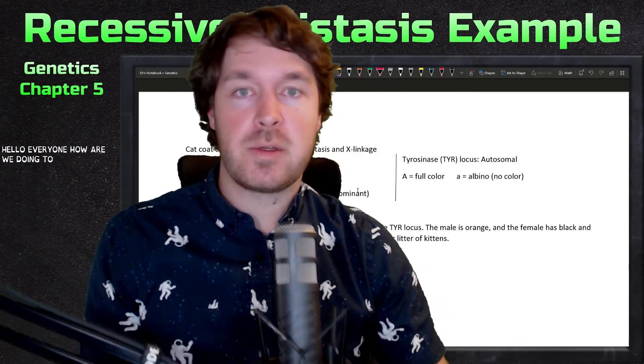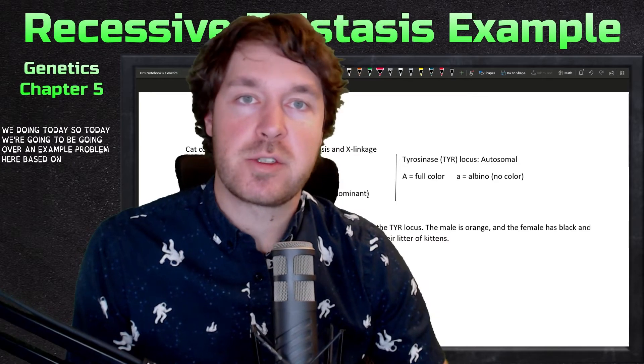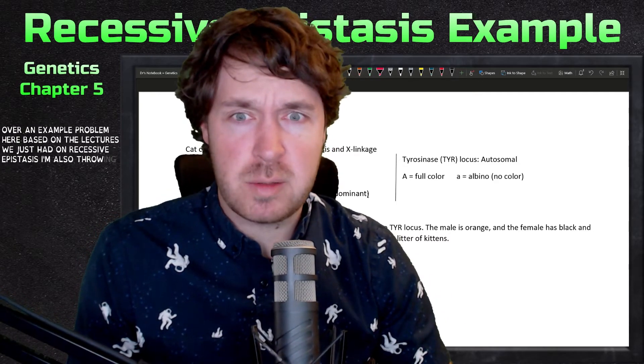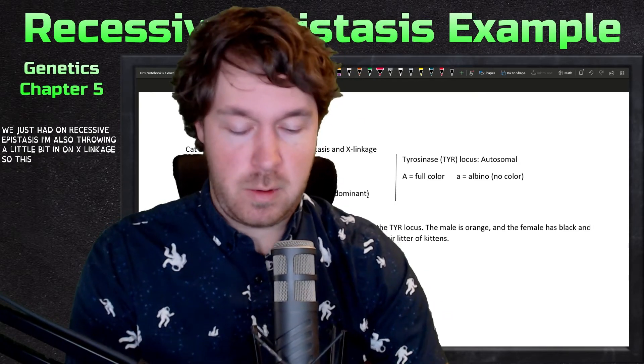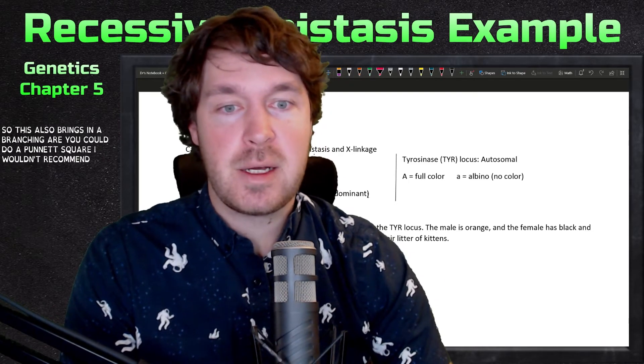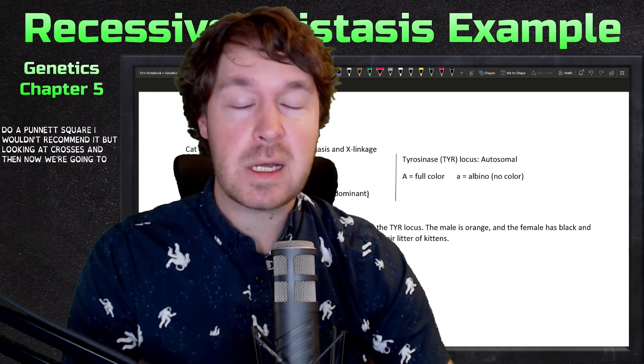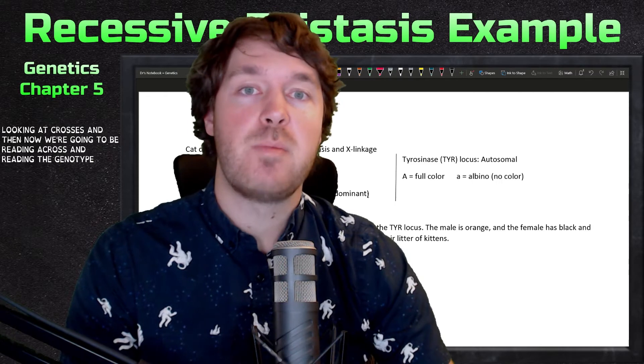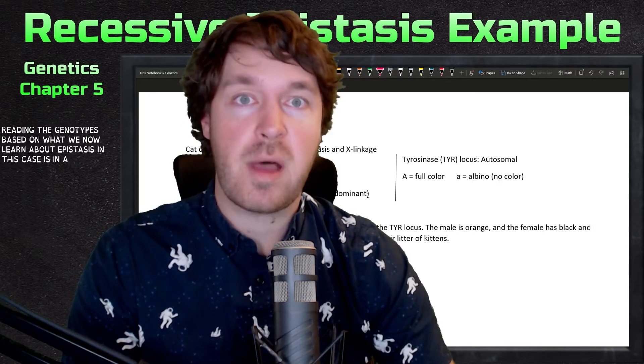Hello everyone, how are we doing today? Today we're going to be going over an example problem based on the lectures we just had on recessive epistasis. I'm also throwing a little bit in on X-linkage. This brings in branching - you could do a Punnett square, I wouldn't recommend it - but we're looking at crosses and now we're going to be reading across and reading the genotypes based on what we learned about epistasis.